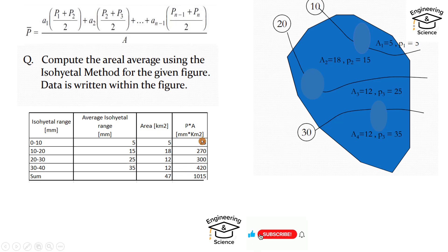P average equals P average 1 multiply area 1, which equals 25, plus P average 2 multiply area 2, which equals 270.